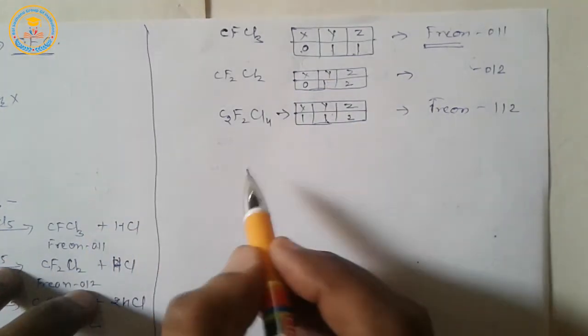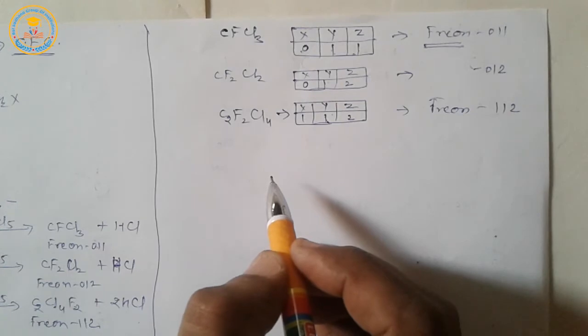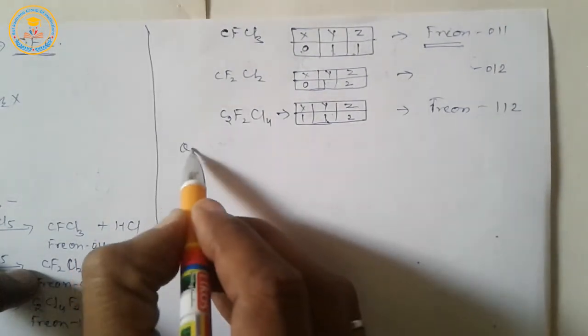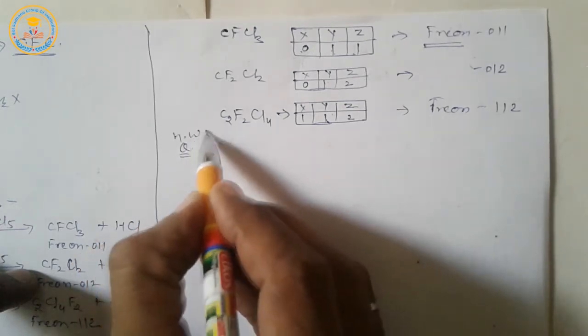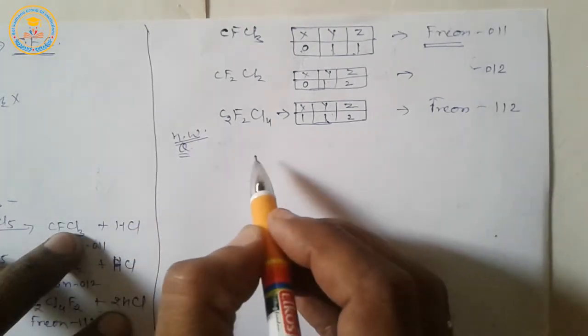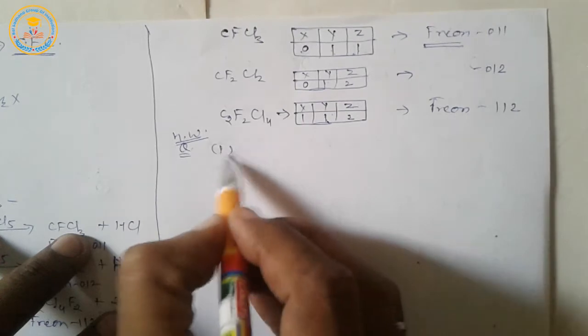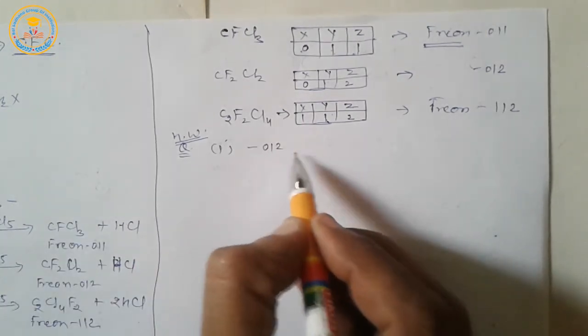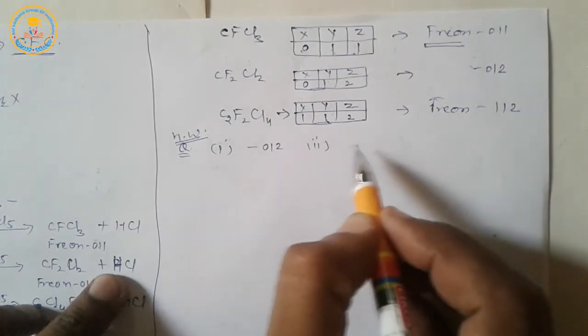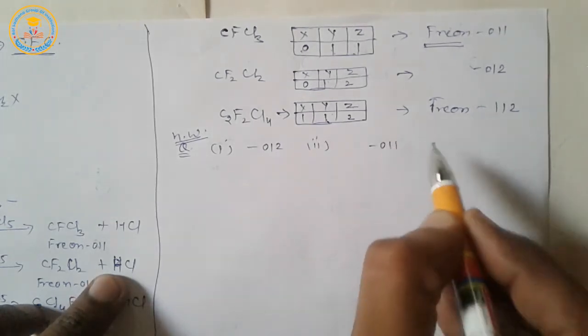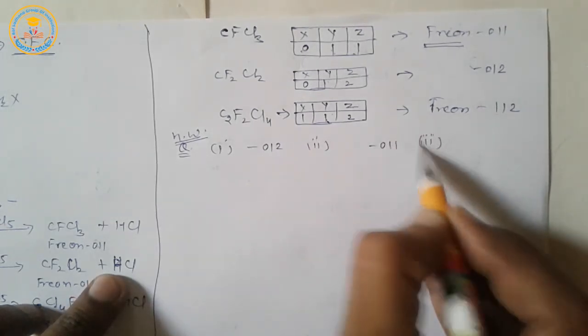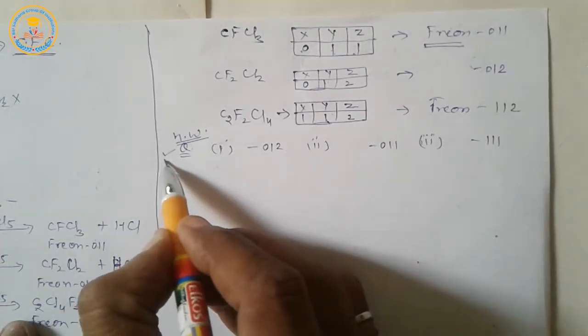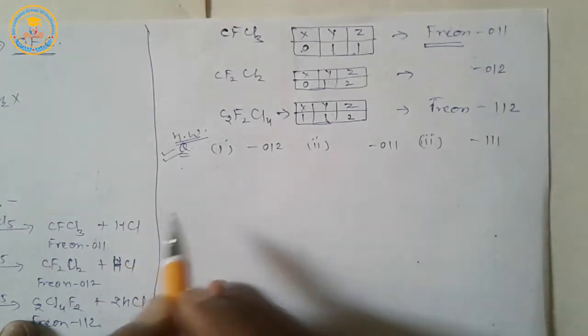Now, we take a question for homework. Write the formula of the following: First is Freon-12. Second is Freon-11. Third is Freon-111. Very important question for homework.